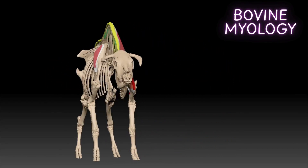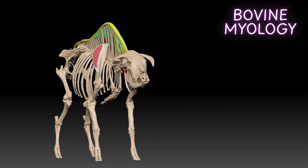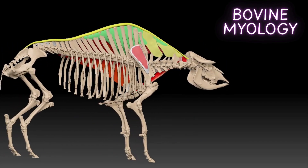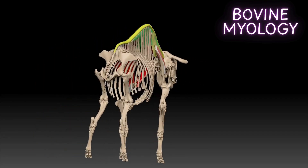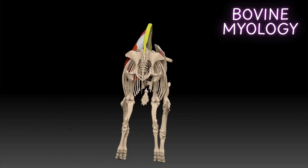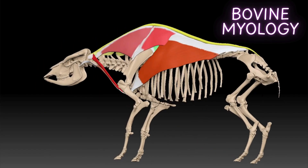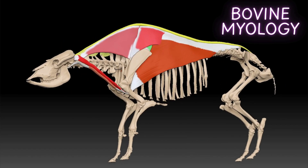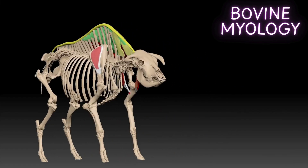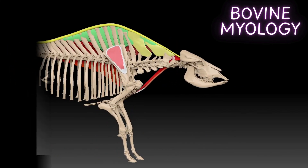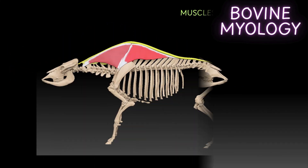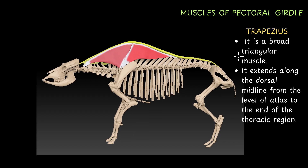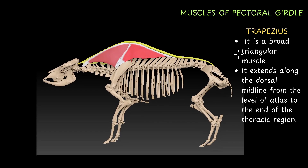Hey everyone, welcome to the first video in our myology series where we will explore bovine muscles in detail. We will look at how muscles originate and how they insert using cool 3D visuals. First we will discuss muscles of the pectoral girdle or shoulder girdle.